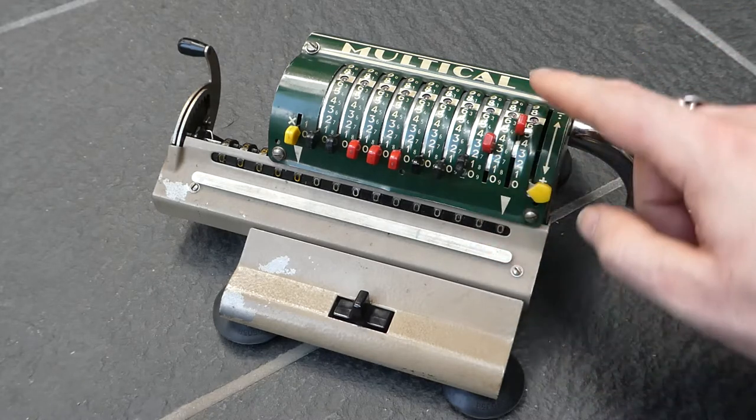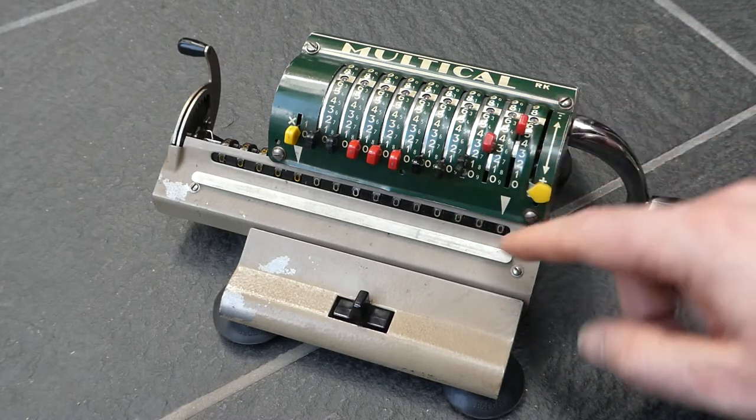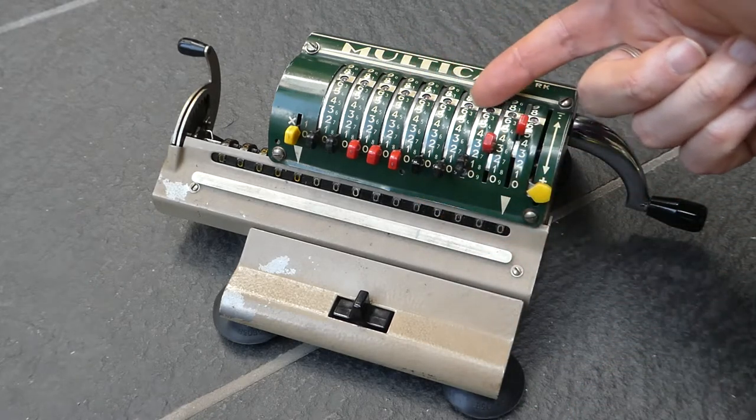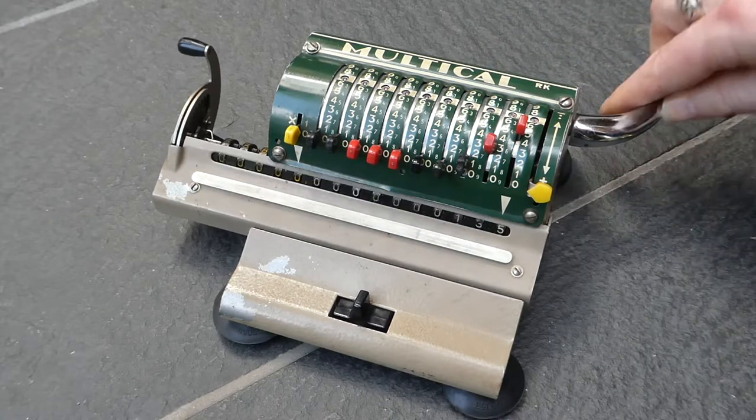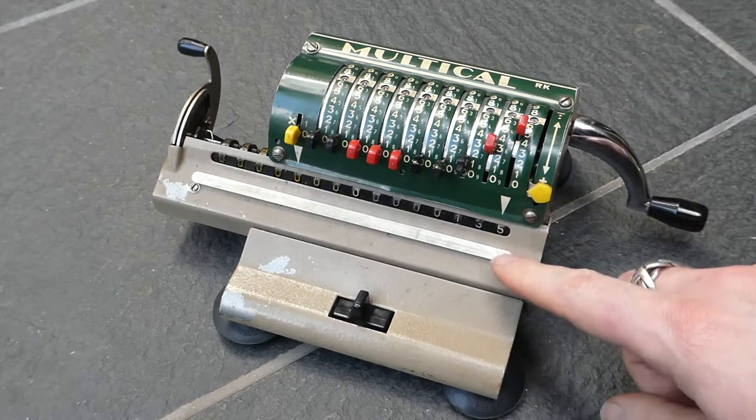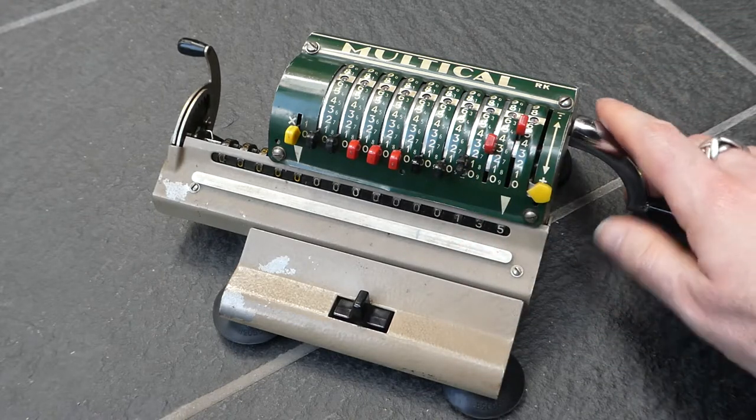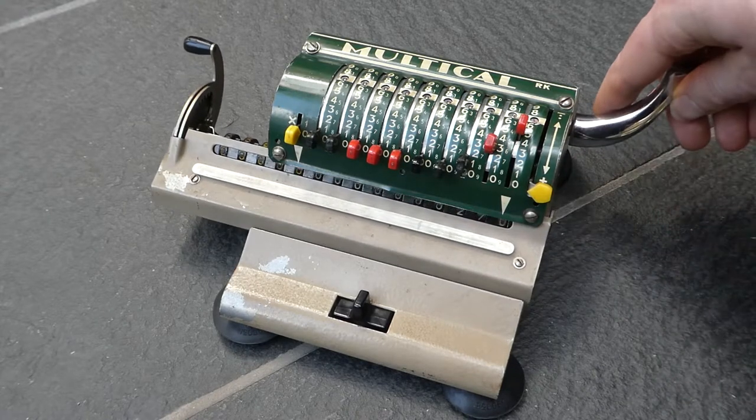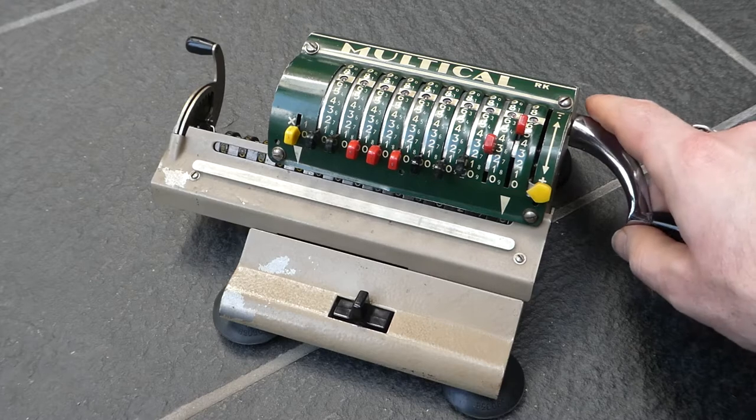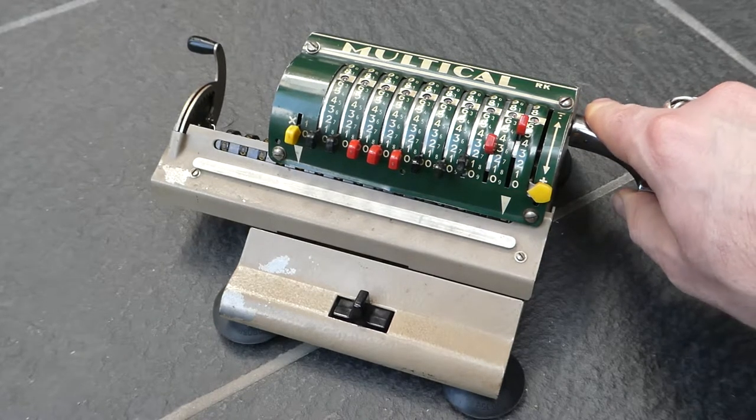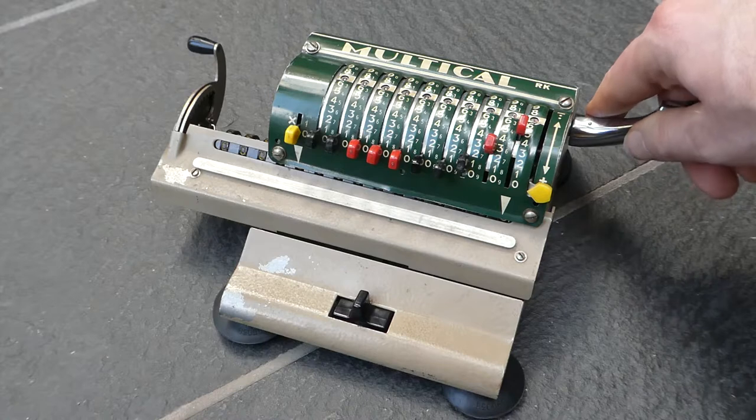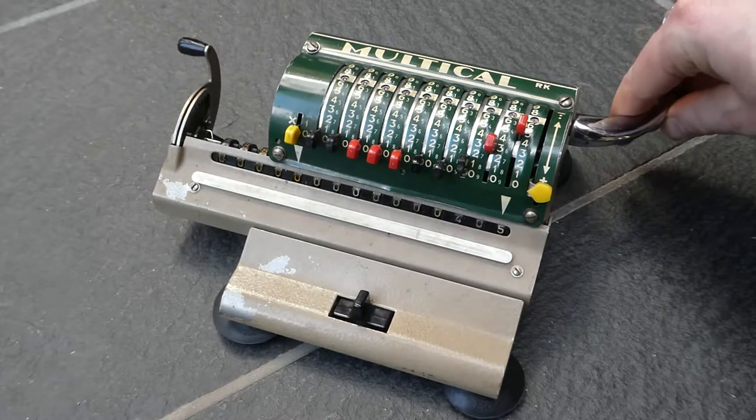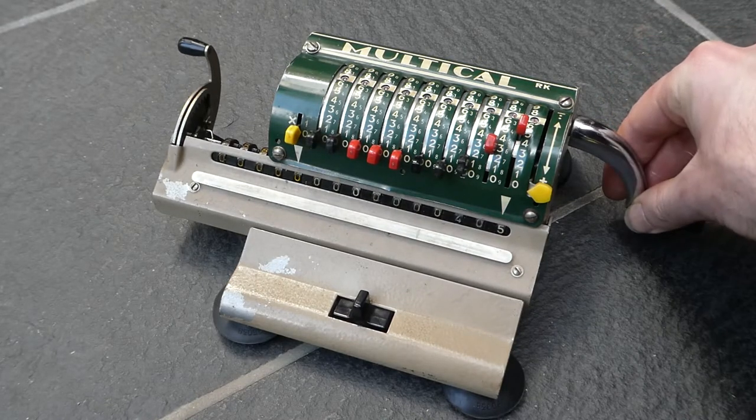If you turn the crank, the input you've entered gets added to the main register. You can read off the input in these little windows here. As you can see, the carriage moves upwards so that the wheels engage with the rest of the mechanism and then get added. These two segments move the wheels and then when the carriage disengages, those segments return to their original positions internally.